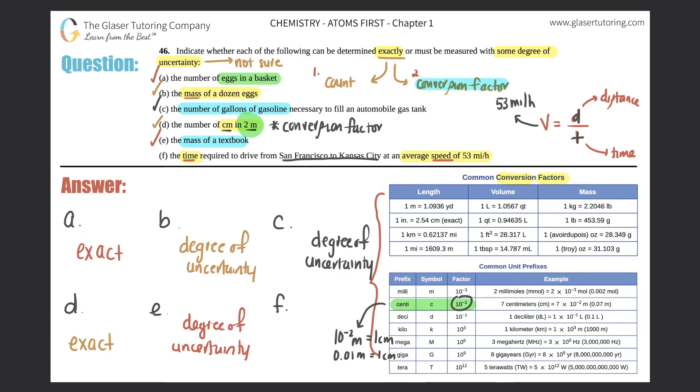Or can I guesstimate? Yeah, I would have to guesstimate, right? I can't count that. And there's no conversion factor to say from San Francisco to Kansas City is blank. So exact is out. So that's why this one, you would have to find it out by a degree of uncertainty.